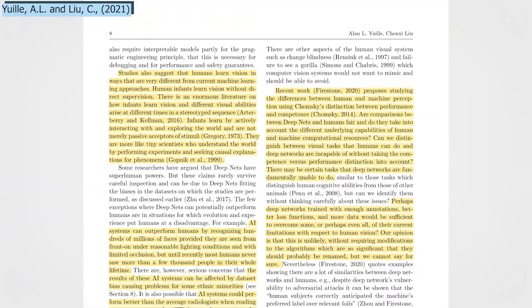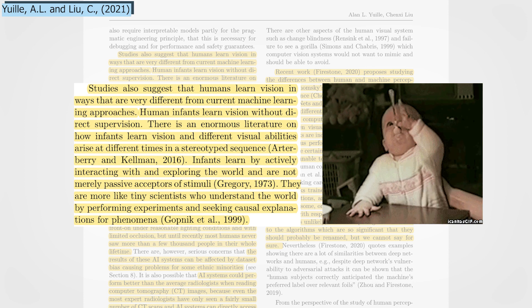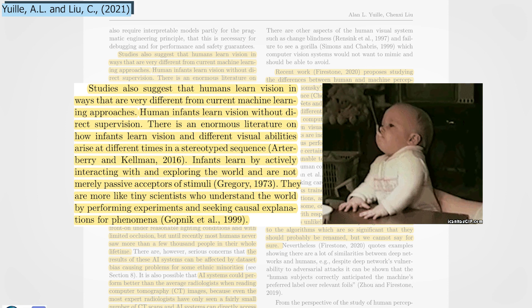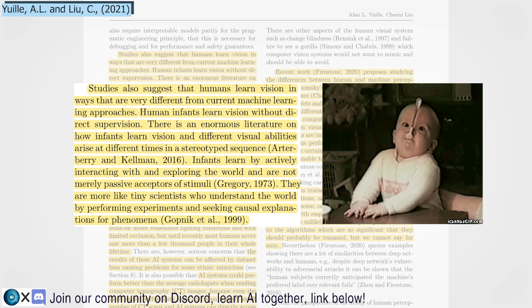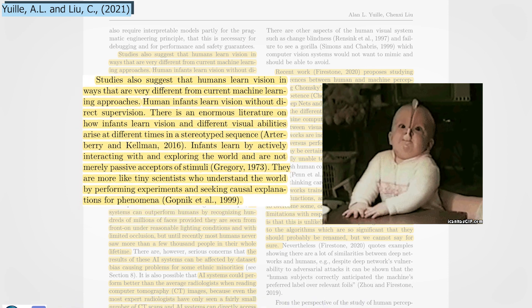In 1999, Gopnik et al. explained that babies are more like tiny scientists who understand the world by performing experiments and seeking causal explanations for phenomena, rather than simply receiving stimulus from images like current deep nets do.